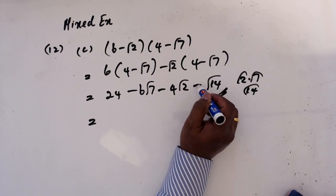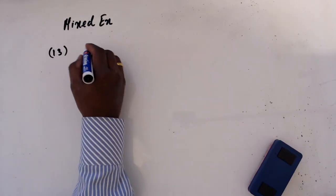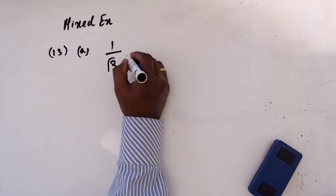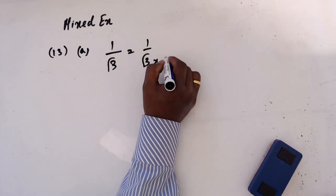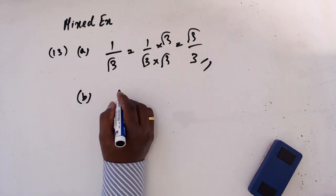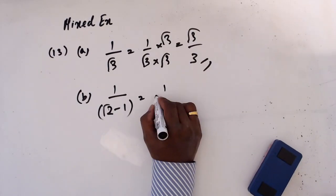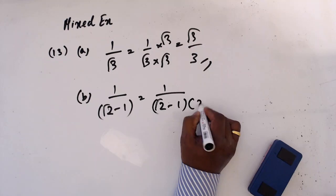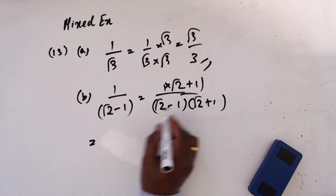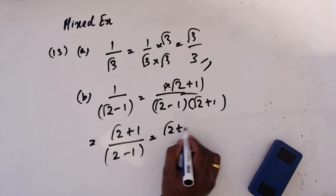Question 13: rationalize the denominator and simplify. 1 over √3, multiplied by √3/√3 gives √3 over 3. Then 1 over (√2 - 1) multiplied by (√2 + 1)/(√2 + 1) gives (√2 + 1) over (2 - 1), which is just √2 + 1.